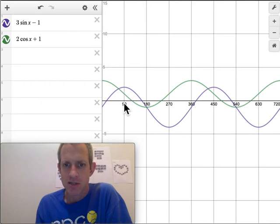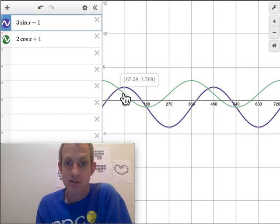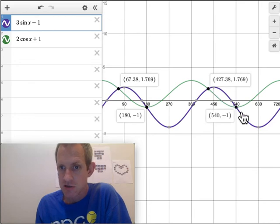So now I can see a picture. And to find the intersections in Desmos is easy. You just click on the intersection. There's one, there's one, here's an intersection, here's one.